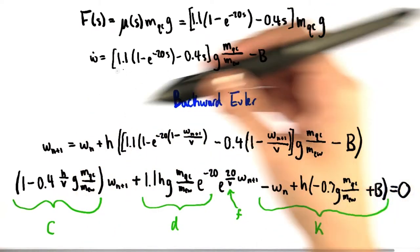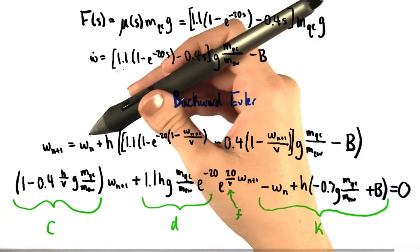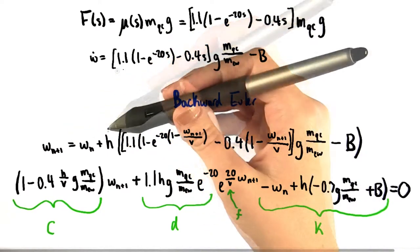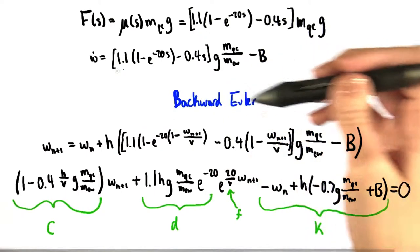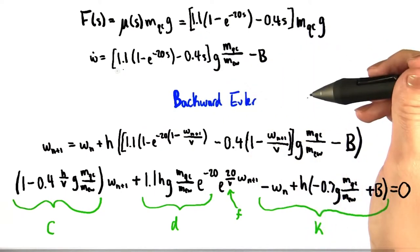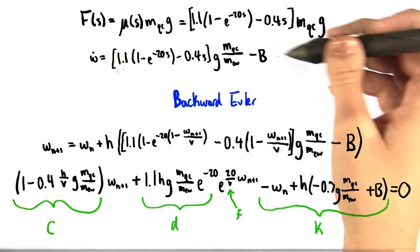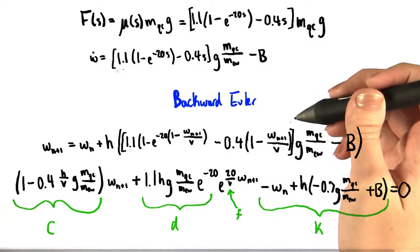And the backward Euler method says that w at the n+1 step is equal to w at the nth step plus the step size times the change in w at the n+1 step. So now that we have our expression for w dot, we can plug it into the proper location in the equation below.